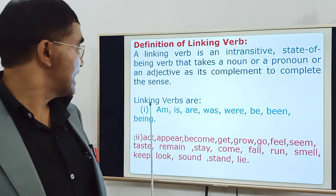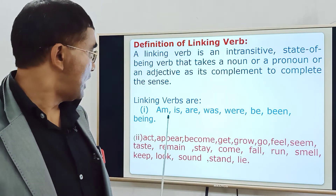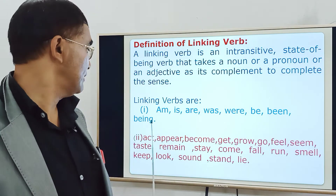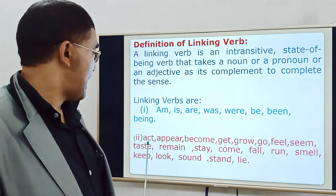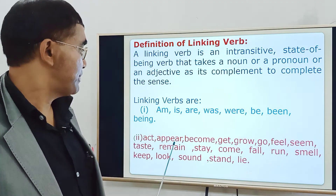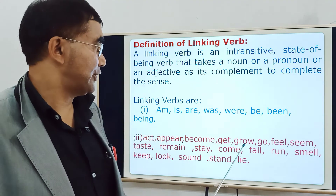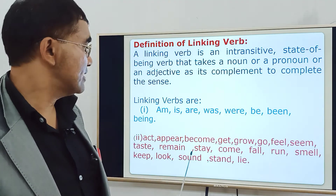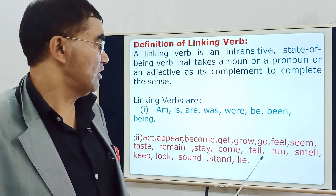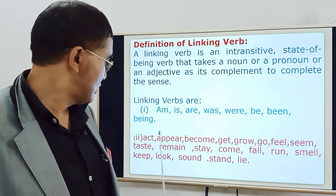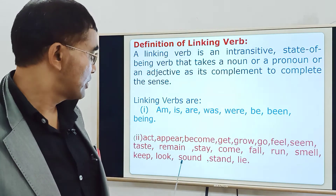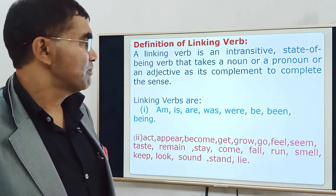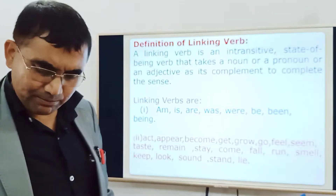The linking verbs are: am, is, are, was, were, be, being, been — then act, appear, become, get, grow, go, feel, seem, taste, remain, stay, come, form, turn, smell, keep, look, sound, and like. These are the examples of linking verbs. In the first list you can see the examples of the 'be' verbs — we know 'be' verbs have eight forms.